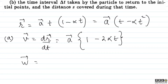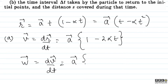Now for the acceleration vector, this is dv vector upon dt. Since a vector is constant it comes out, and inside: 1 differentiates to 0, and minus 2 alpha t differentiates to minus 2 alpha. So the acceleration vector is minus 2 alpha times a vector. That clears part (a).